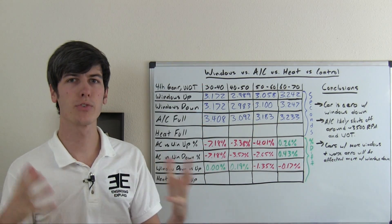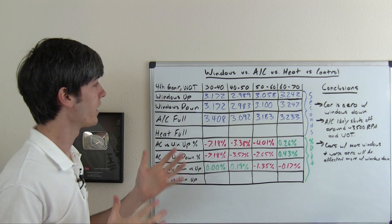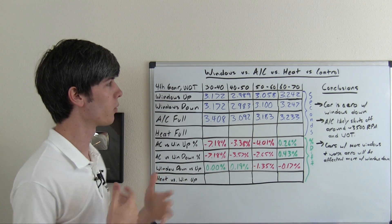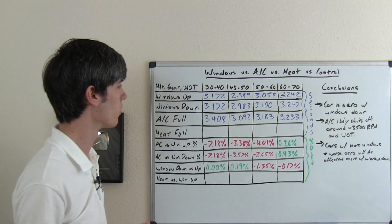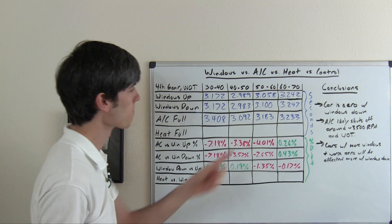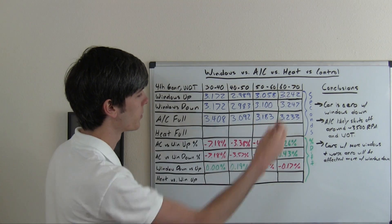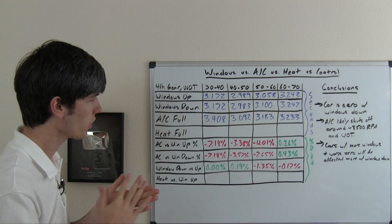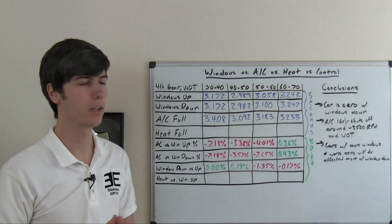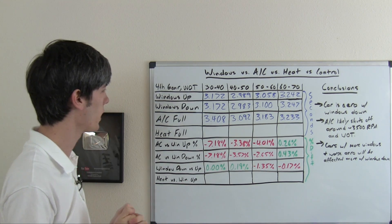Now we've got those results, we can take the average from each of the three runs across the different mile-per-hour intervals — 30 to 40, 40 to 50, 50 to 60, and 60 to 70. We realized something a bit surprising: there isn't that much aerodynamic difference between having the windows up and windows down at these speed intervals. From 30 to 40 they were exactly the same; 40 to 50 was almost identical; 50 to 60 was slightly faster with windows up, though that could be driver error; and 60 to 70 was again almost identical.